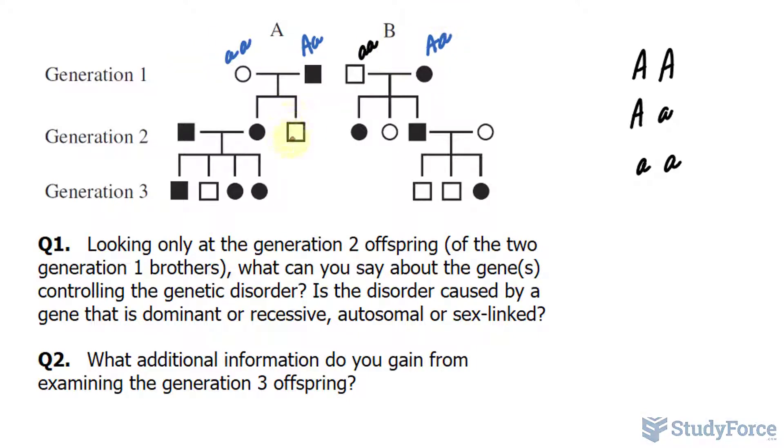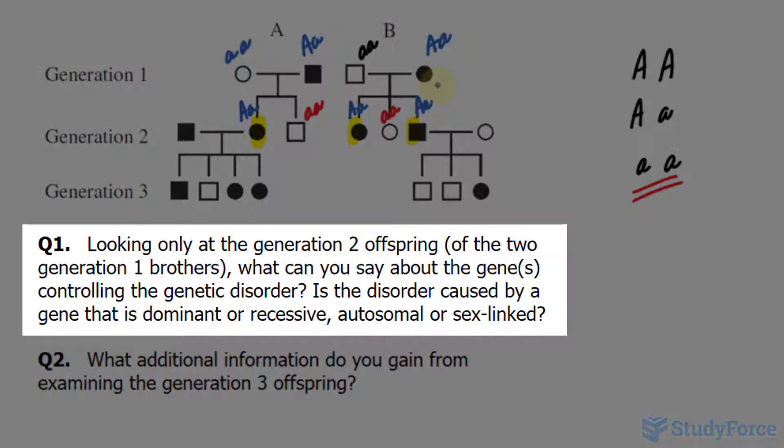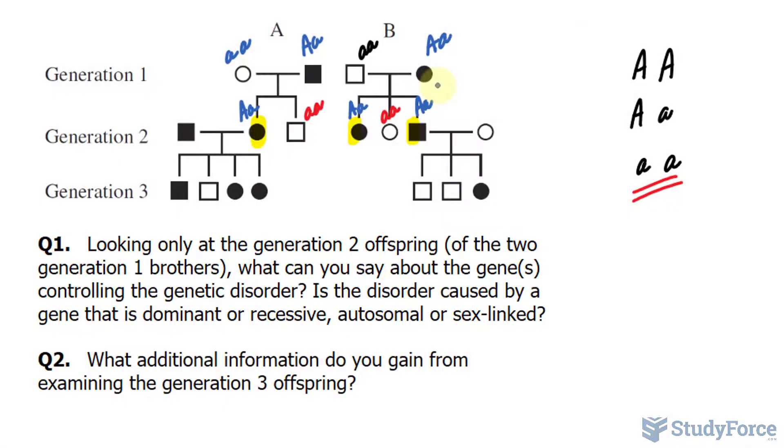Then the genotype here will be little a little a. The genotype for this person would be little a little a. Remember, you are healthy if you haven't inherited two recessive alleles. The remaining children would have to be heterozygous. Looking back at question number one, is the disorder caused by a gene that is dominant or recessive? We're going to say dominant. Is it autosomal or sex-linked? We haven't explored the possibility that it is sex-linked, so let's also explore that.